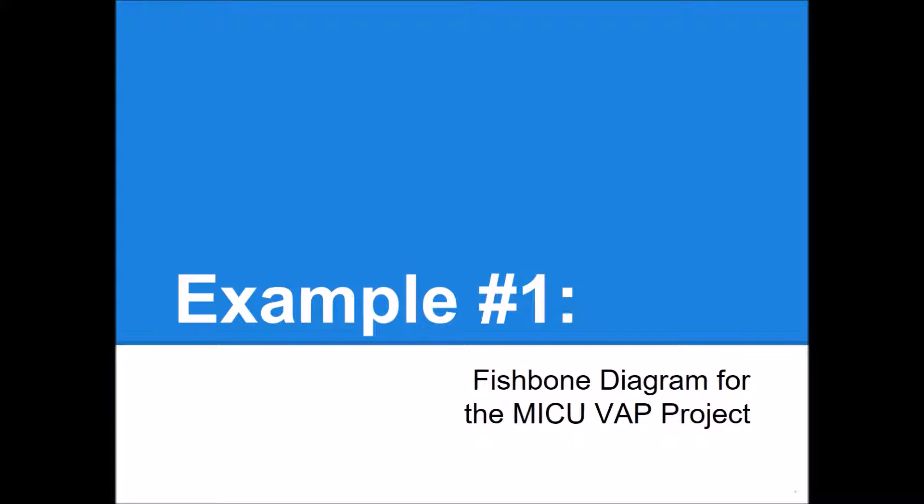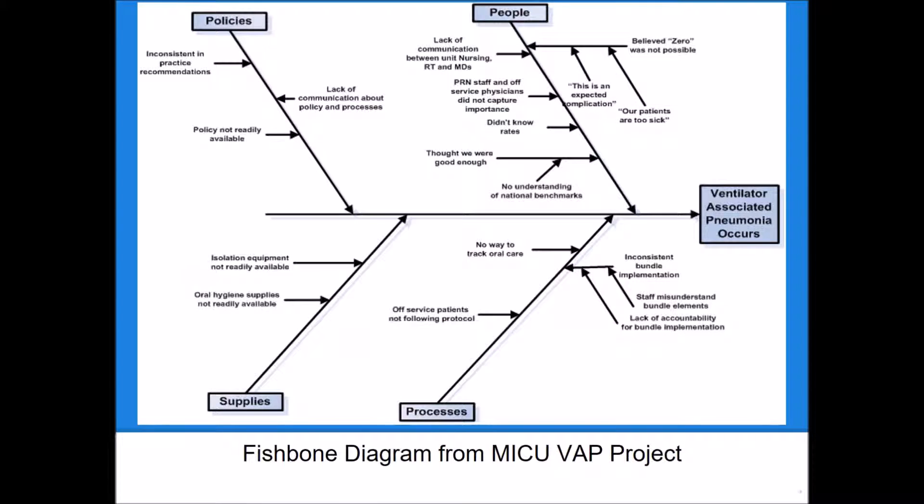So let's look at an example together. This first one is from the MICU ventilator associated pneumonia project that we've talked about in several of our previous lectures. This is the fishbone diagram they created. They started by stating their main problem that a ventilator associated pneumonia occurs. They then used main categories. In this case, they used people, policies, supplies, and processes.